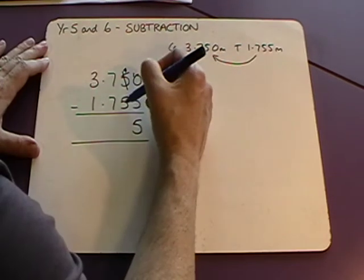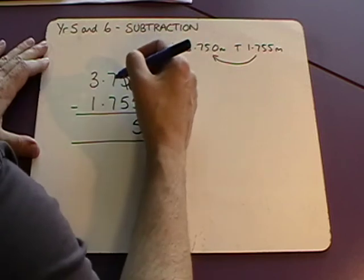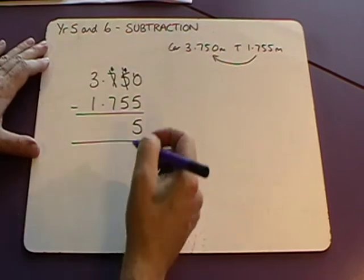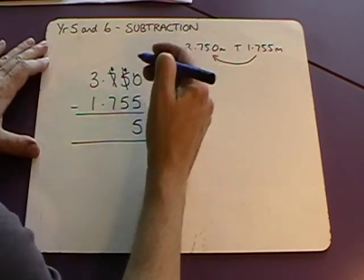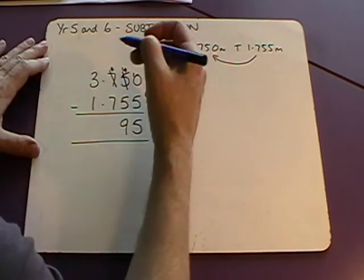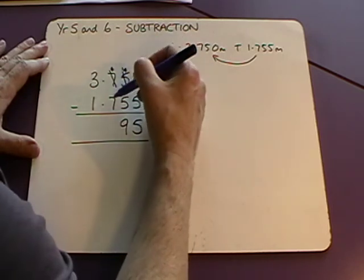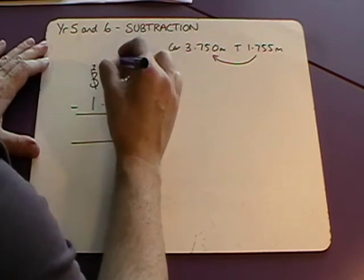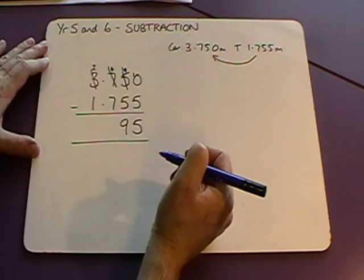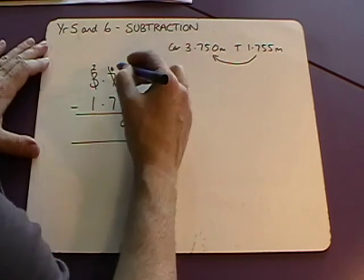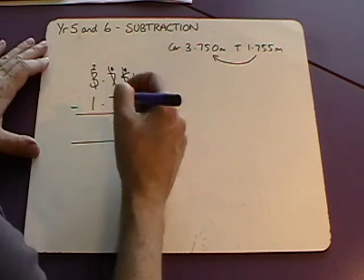Then we've got four subtract five. We can't do. We're going to need to borrow from the tenths column. So we take six tenths and we put that one there. Fourteen subtract five is nine. And then go to our tenths column. Six subtract seven we can't. We need to borrow from the ones column. It leaves us with two ones. And we place that over there to make sixteen tenths. Take away seven tenths. Sixteen subtract seven is nine.